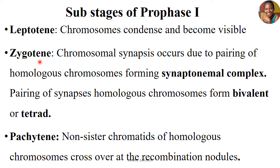In the Zygotene stage, we have chromosomal synapsis — this is where the pairing together of homologous chromosomes occurs, forming a complex known as the synaptonemal complex. As a result of the pairing of these synapsed homologous chromosomes, we form what we call a bivalent or tetrad, which is a case whereby we have four sister chromatids of four paired homologous chromosomes.